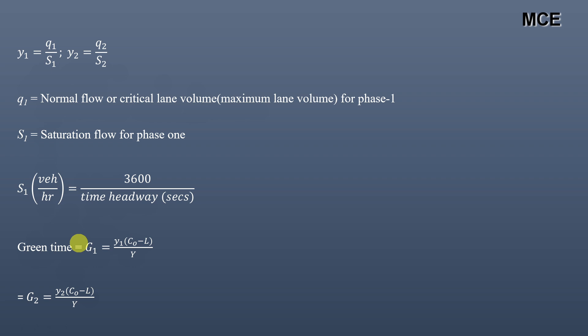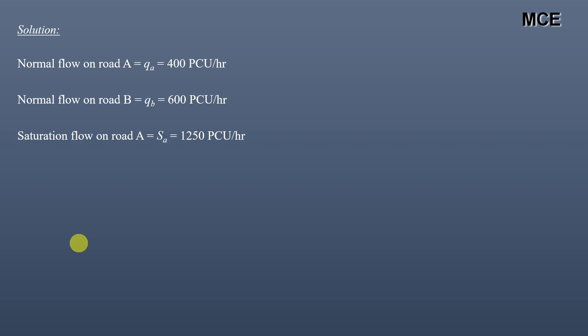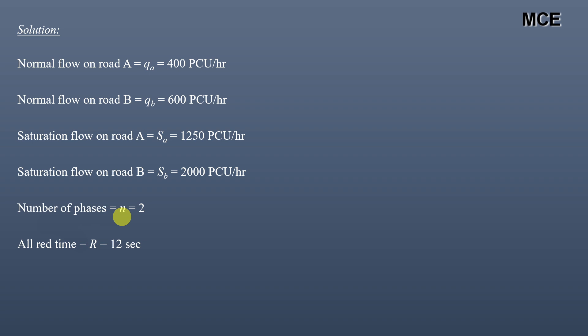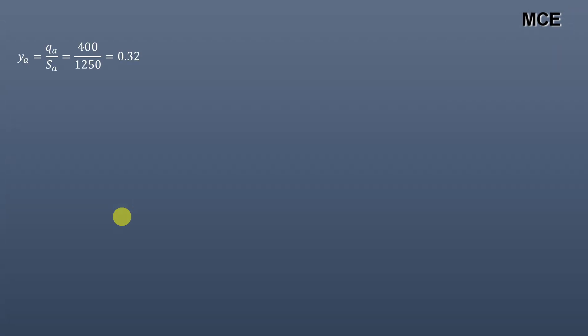Now we will solve the question to better understand the concept. In our case, the normal flow on road A is 400 PCU per hour and on road B is 600 PCU per hour. Saturation flow on road A is 1250 PCU per hour and on road B is 2000 PCU per hour. We have to design a two-phase traffic signal, so the number of phases n equals 2. The all-red time is given as 12 seconds — this is the time during which all signals show red, used for pedestrian crossing.